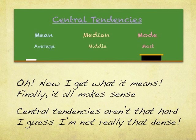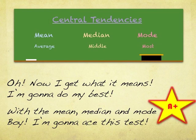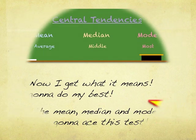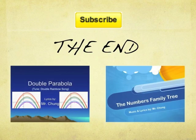Now I get what it means — finally it all makes sense. Central tendencies aren't that hard, I guess I'm not really that dense. Now I get what it means. I'm gonna do my best with mean, median, and mode — boy, I'm gonna ace this test!